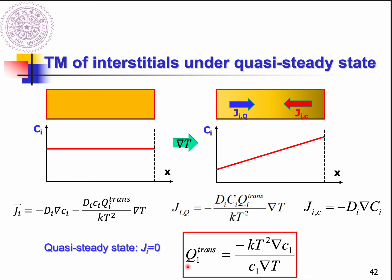When the system reaches quasi-steady state, the net atomic flux equals zero, and you can calculate the heat of transport. You need to measure the concentration profile at different time periods until you confirm the profile does not change with time. At that moment, calculate the concentration gradient, temperature gradient, average concentration, and average temperature. Put all this information in and you can get the heat of transport of these interstitials in your material system.